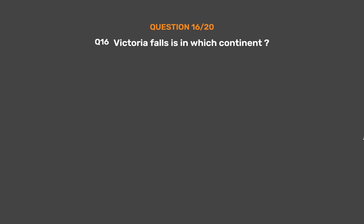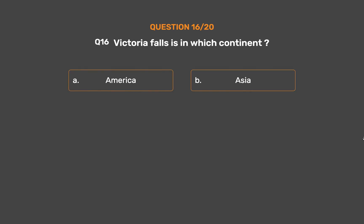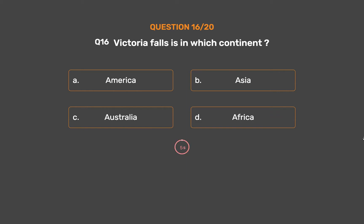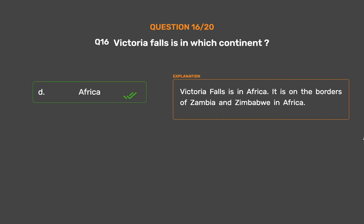Question No. 16: Victoria Falls is in which continent? Option A: America. Option B: Asia. Option C: Australia. Option D: Africa. The correct answer is Option D: Africa. Victoria Falls is in Africa. It is on the borders of Zambia and Zimbabwe in Africa.